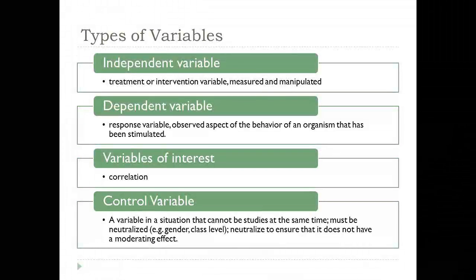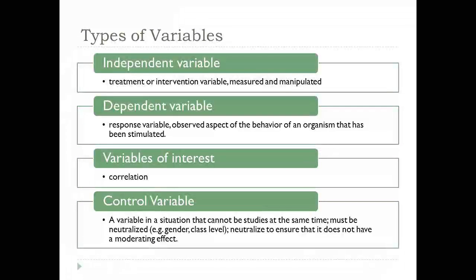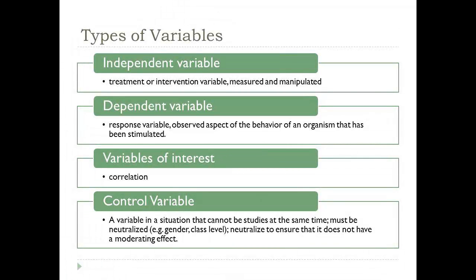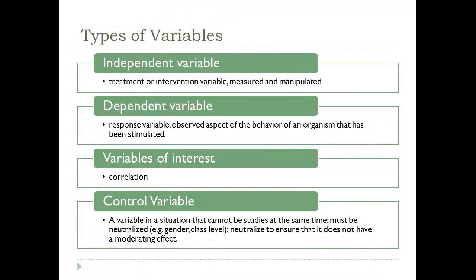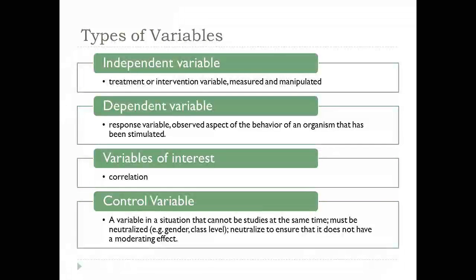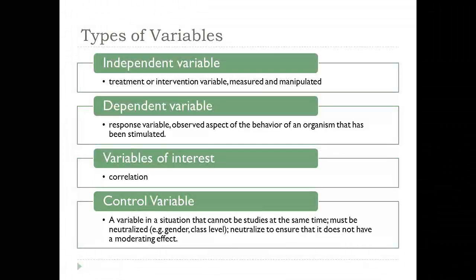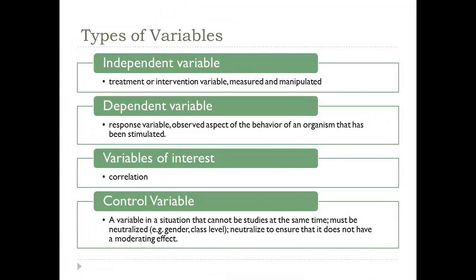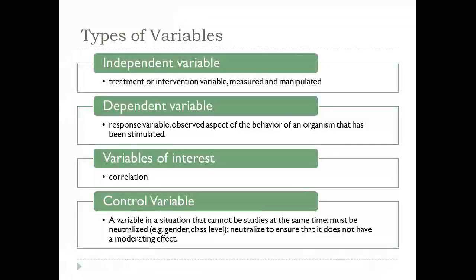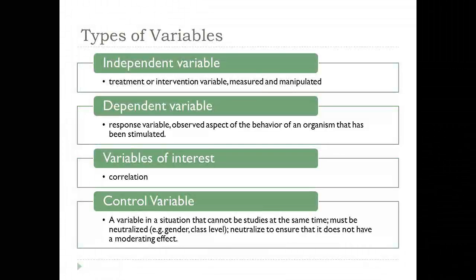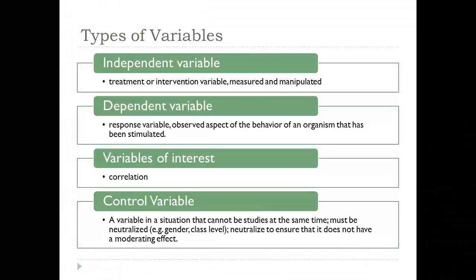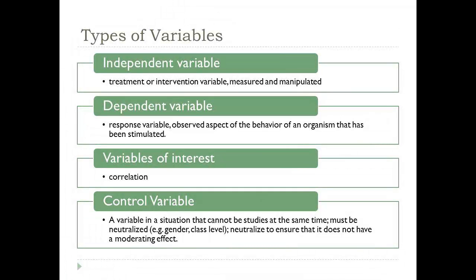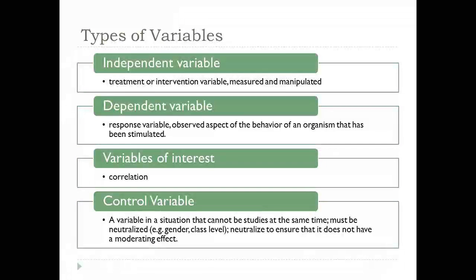When you plan a regression study, instead of using the term independent variable, you often use the term predictor or predictor variables. The independent variable is usually the variable you're looking to have some type of effect on the dependent variable — it's the variable that the researcher manipulates. Often in a regression study you're not manipulating the variable, so you use the term criterion and predictor.